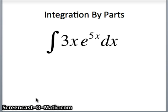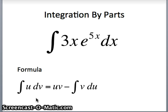So here we go. Integral of 3x e to the 5x dx. This is going to be solved with integration by parts. Remember our formula: the integral of u dv is uv minus the integral of v du. So we know that.